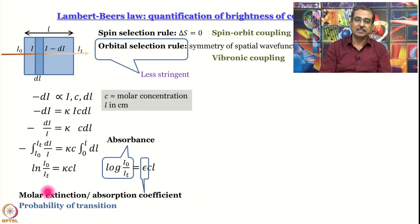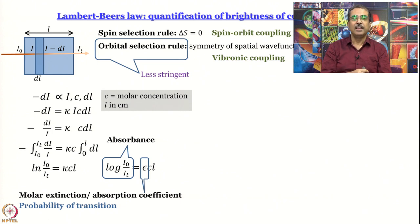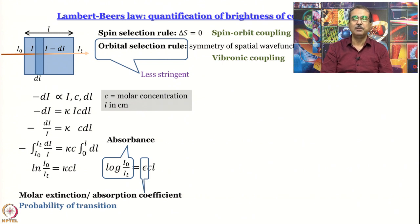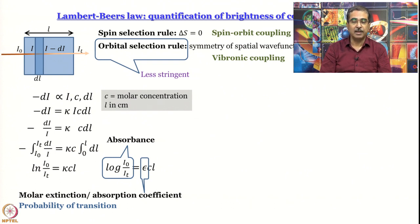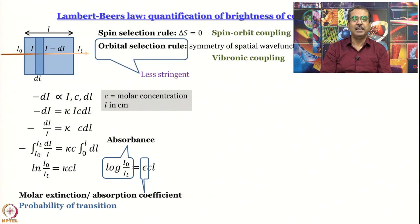The molar extinction or molar absorption coefficient tells us about the probability of transition — an experimental parameter indicating how probable the transition is. With a little theory one can find a relationship between this experimentally observed quantity and the theoretically calculated probability of transition. This is worked out in many standard textbooks — Barrow is classic but out of print; McQuarrie and Simon's book or Atkins' Physical Chemistry cover it. For more detail, Banwell's Molecular Spectroscopy; for even more, Molecular Spectroscopy by Jack D. Graybeal, though that is beyond the scope of this course.